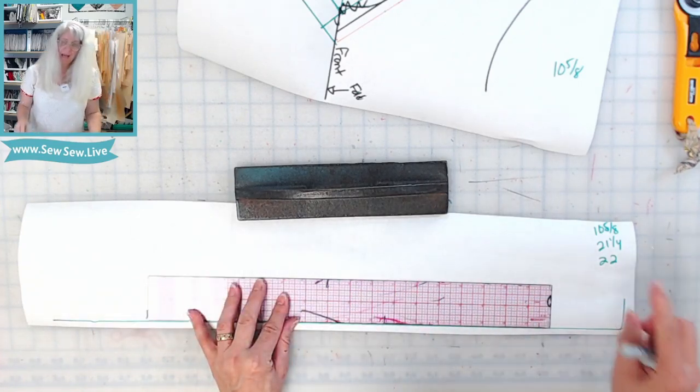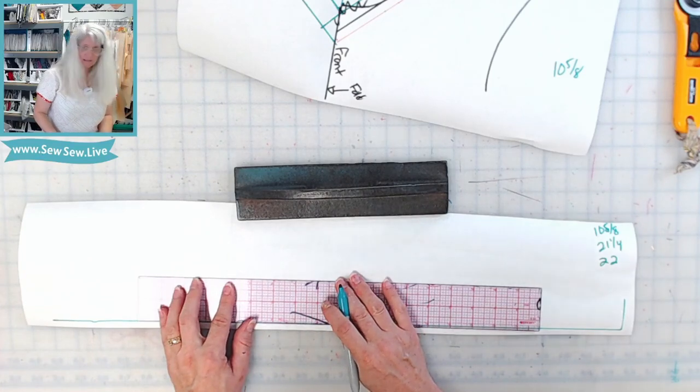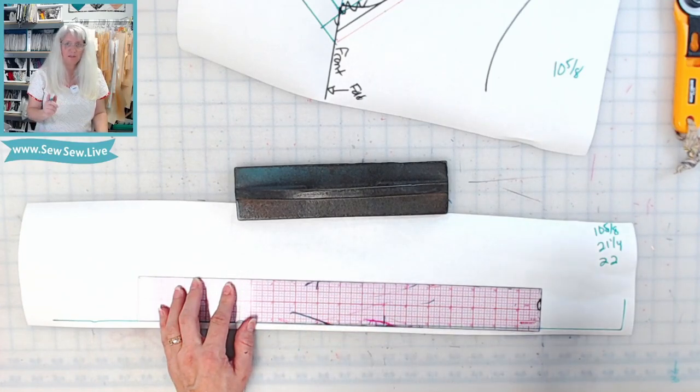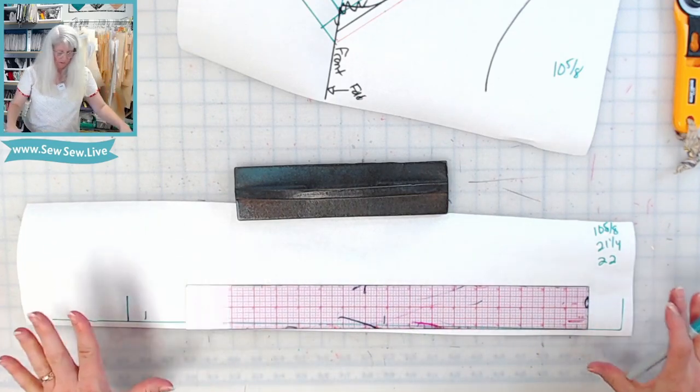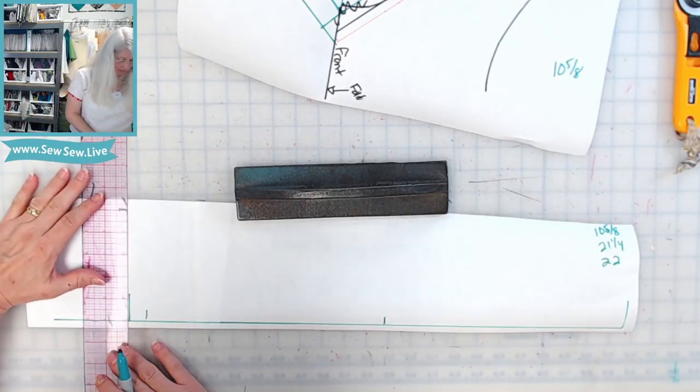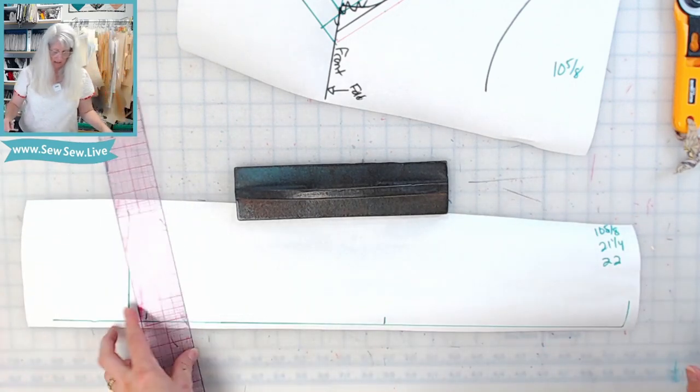Then we're going to add the seam allowance for either end twice. So you're going to do, for me, my seam allowance is three-eighths of an inch, so I'm going to add three-eighths of an inch twice. So I'm going to add three-quarters of an inch. And then that is now your finished length of your neckband. So we can square it. Make sure you get a nice square ends here.